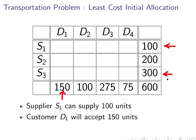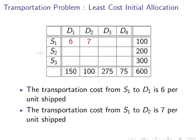So that is how we would read the row totals and column totals. Let's look at the internal cells there. Those are the transportation costs per unit. So the transportation costs from S1 to D1 is 6 per unit, and transportation costs from S1 to D2 is 7 per unit and so on.